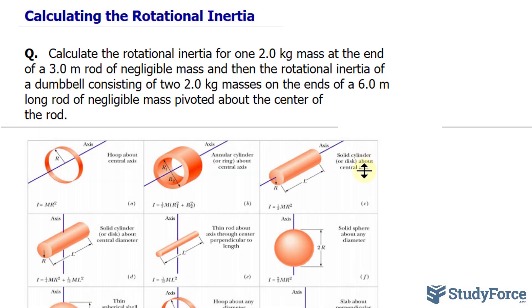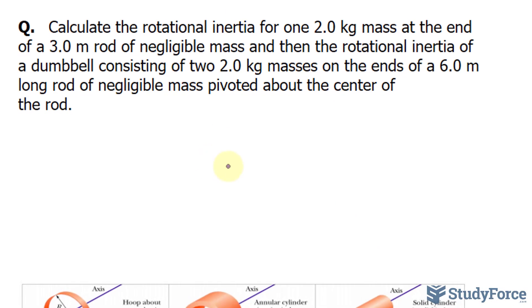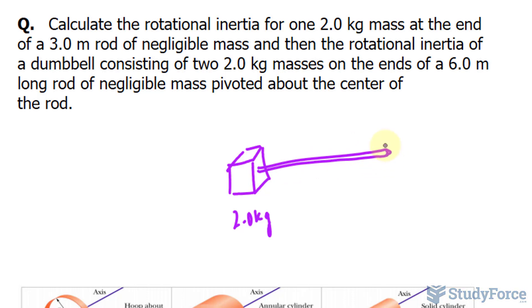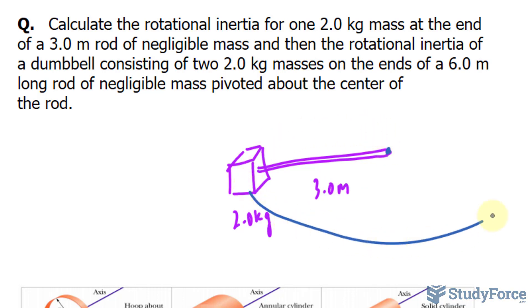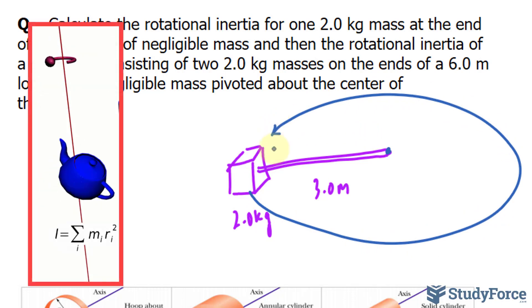Let's begin with an illustration. For that first scenario, we have a 2-kilogram mass, which I'll represent as this cube. It's connected to a rod that is 3 meters in length. This is being rotated from this point, moving in that pathway, much the same way that you see in the animation on your screen.